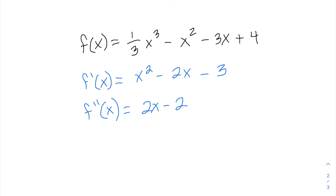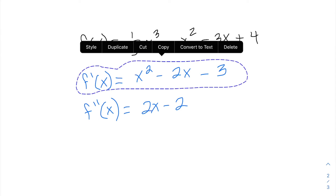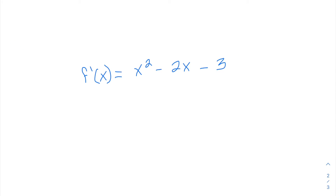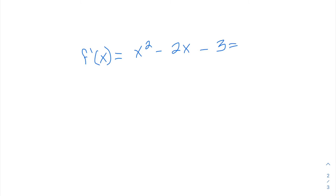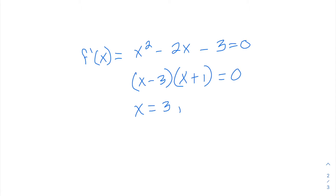Hopefully if you've already learned about finding extrema, we know that when finding extrema we set the first derivative equal to 0. So let's take this first derivative and figure out our critical points. Setting it equal to 0, it factors as (x minus 3)(x plus 1), so we get x equals 3 and x equals negative 1 as our critical points.